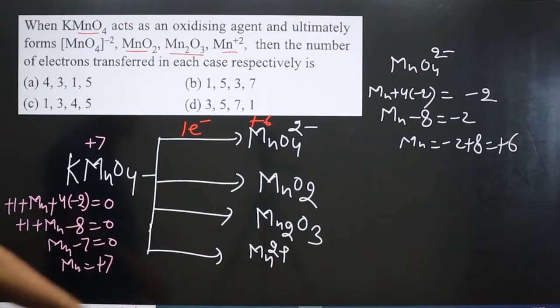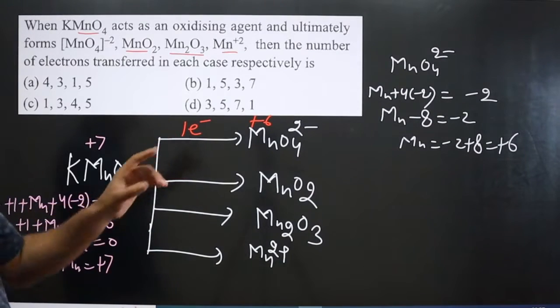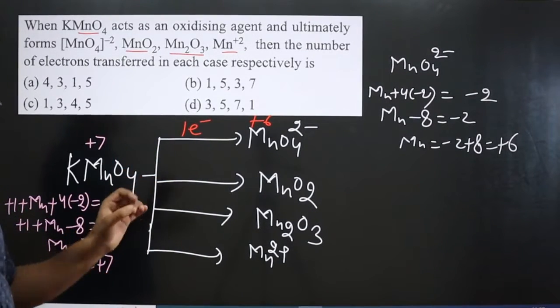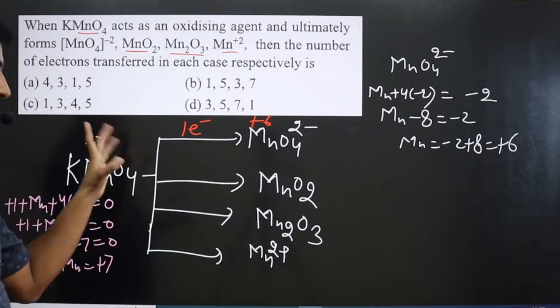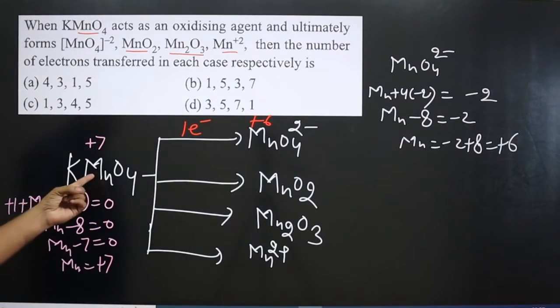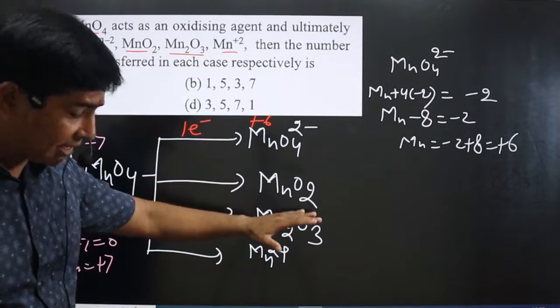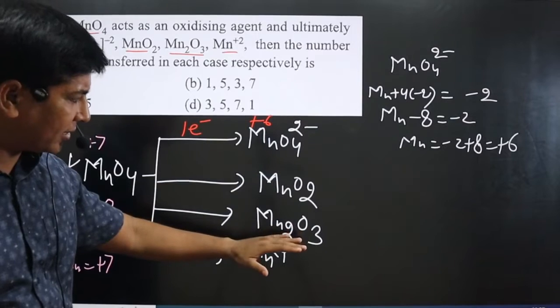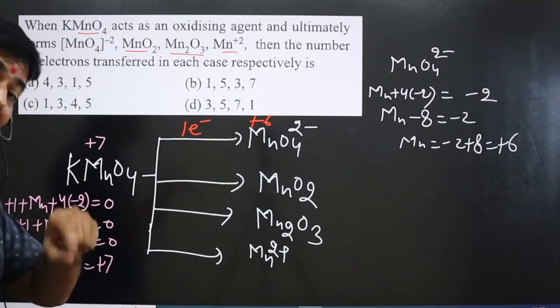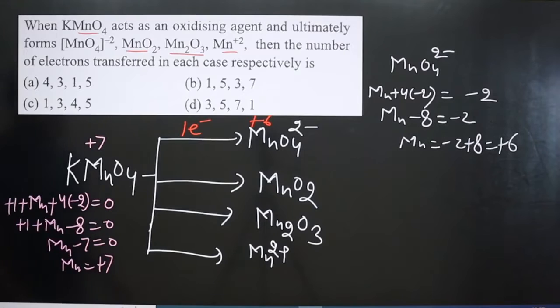Similarly we can do in rest of the compounds also. Difference in oxidation numbers - we always subtract small value from the large value. Anyway, MnO4 is present in its highest oxidation number, beyond +7 it cannot show. So whatever oxidation number we are getting here, all these oxidation numbers will be less than below 7.